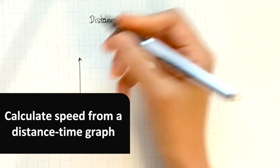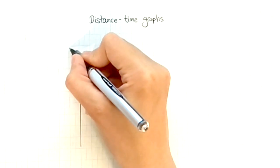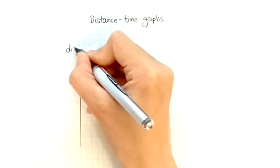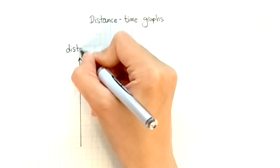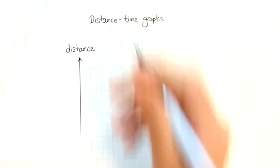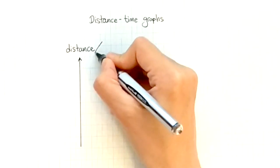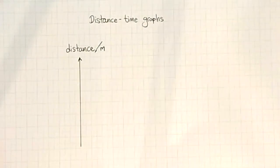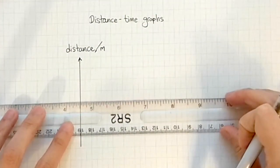The vertical axis is for distance, and we usually measure distance in meters when it comes to physics. The horizontal axis is time.